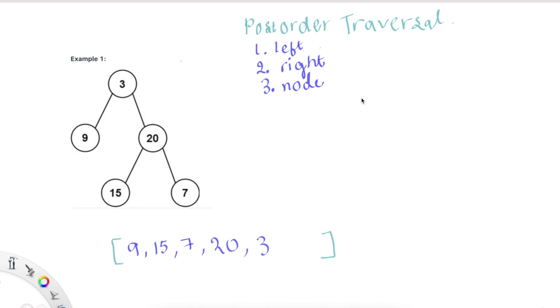So without further ado, let's go ahead and look at today's problem. Today we're looking at the problem postorder traversal of a binary tree, and I just wrote out what the order of that traversal is. So for this traversal we need to consider the left node first, and then the right node, and then finally the node that we're on.